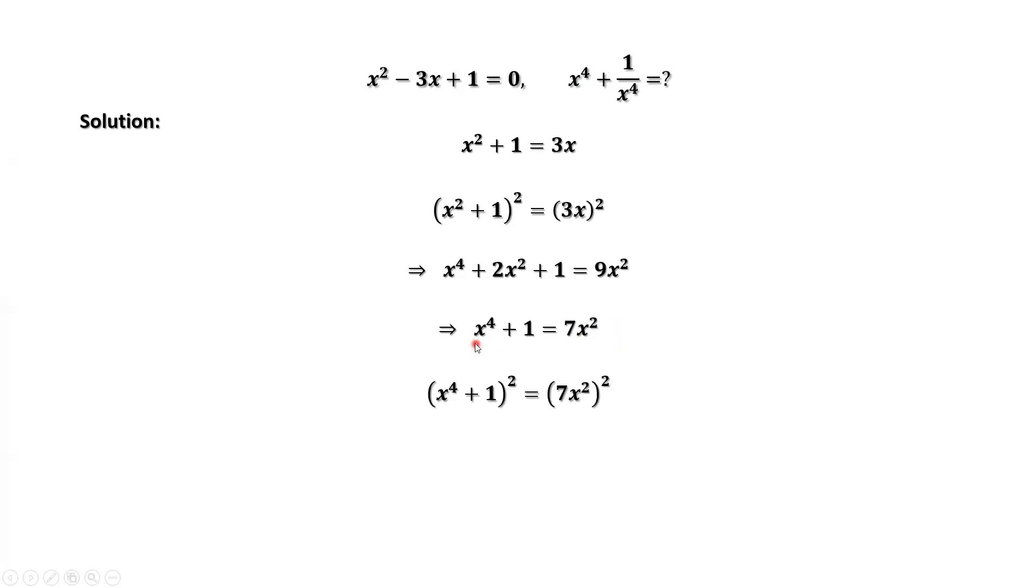Taking squares on both sides of this equation, we have x to the power of 8 plus 2 times x to the power of 4 plus 1 equals 49x to the power of 4. We move 2x to the power of 4 to the right-hand side. Then we have x to the power of 8 plus 1 equals 47 times x to the power of 4.